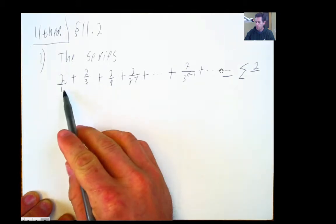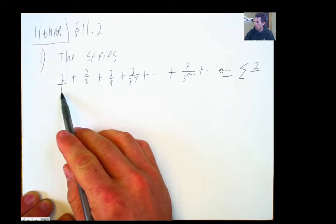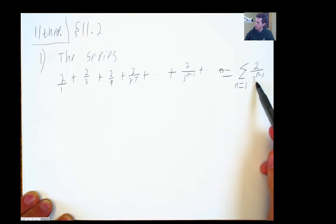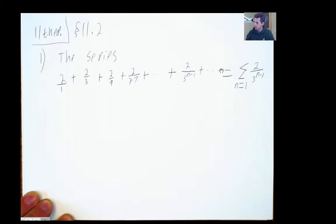So I think what they mean is for n, the indexing variable here to start with 1, and that way when I put 3 to the n minus 1 over there, the first term in the sum with n being 1 is 3 to the 1 minus 1 to give me that 1. Sounds good.